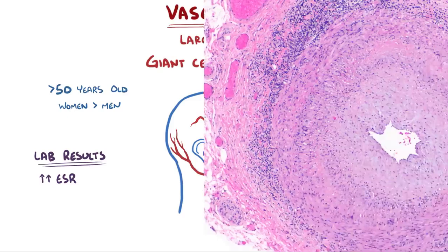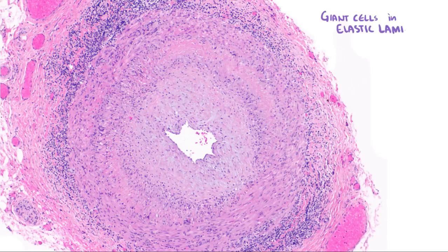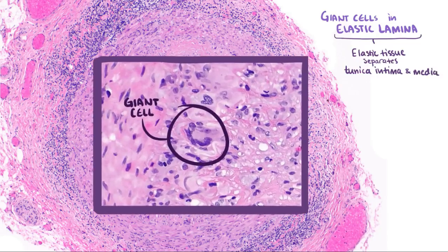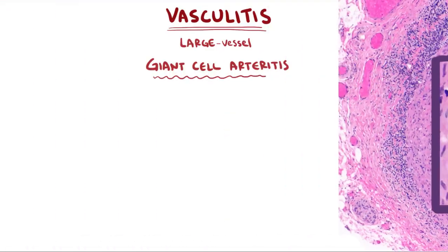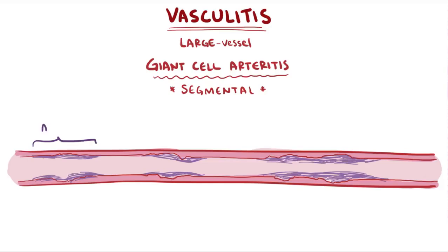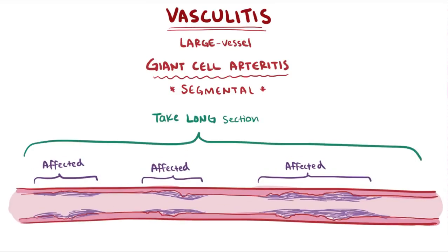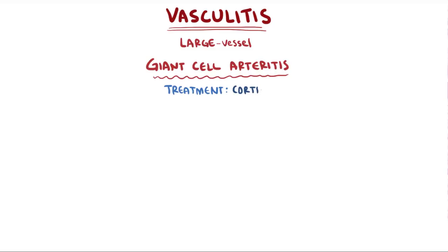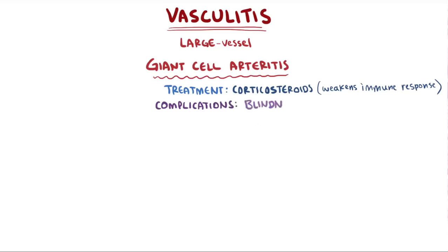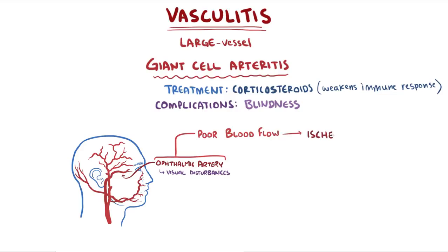A biopsy of the affected artery will show giant cells embedded in the internal elastic lamina — a thin layer of elastic tissue separating the tunica intima and tunica media. These giant cells are actually granulomas: groups of monocytes packed tightly together. Giant cell arteritis is segmental, meaning only sections of an artery are affected, so a long section must be biopsied. Treatment is with corticosteroids. People whose ophthalmic artery is affected and don't receive treatment are at high risk of irreversible blindness.